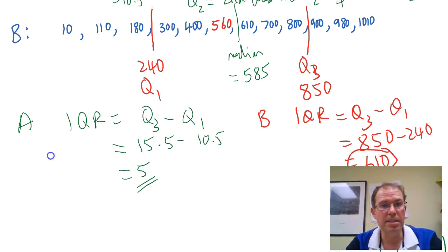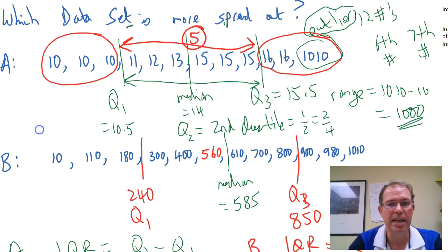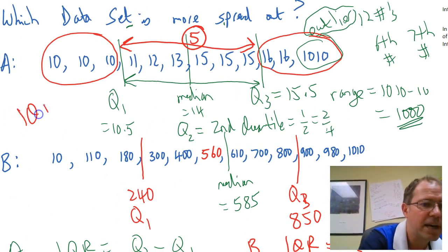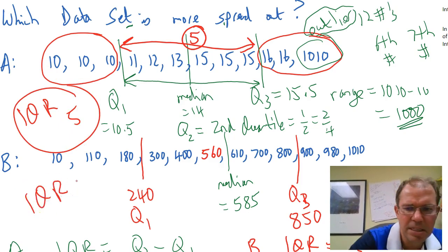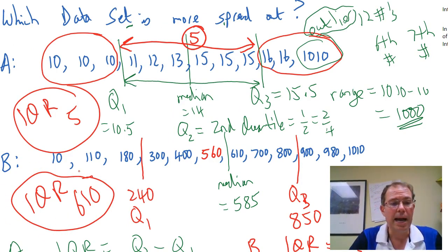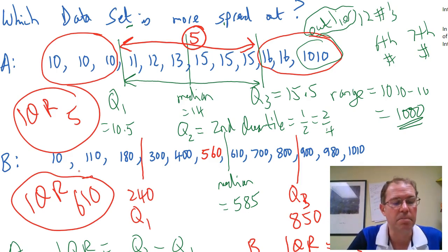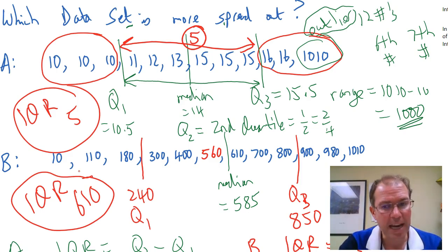So now we can see, going back to our original question of which data is more spread out: A had an interquartile range of 5, and B had an IQR of 610. So we've now got a mathematical measurement to actually support our gut reaction that B is more spread out. B is a lot more spread out and we've got a mathematical measurement to show that's the case. So that's the interquartile range — the range inside the quartiles, hence interquartile range.